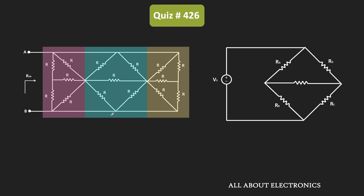Because if you see over here, these two resistors are connected at one end, while in between this resistor R is connected. Similarly, these two resistors are also connected at one end and the remaining two arms are connected between the resistors. The same thing also happens for the third portion. That means this circuit consists of Wheatstone bridges.